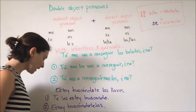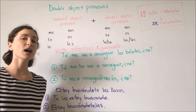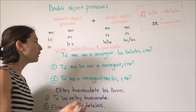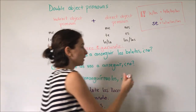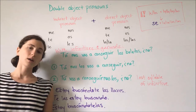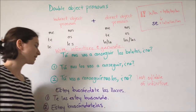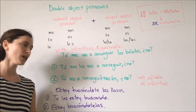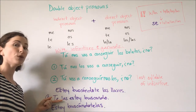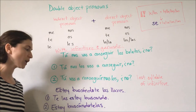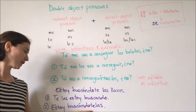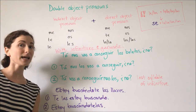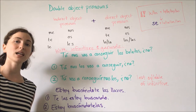When we put both object pronouns at the end of an infinitive, they must go together — we cannot separate them — and we will need to add an accent on the last syllable. On the other hand, if we have a gerund, such as 'Estoy buscándote las llaves,' where 'buscando' is our gerund, we can put our object pronouns either before the conjugated verb or at the end of the gerund. Similarly, we must use an accent when putting these object pronouns at the end of the gerund.